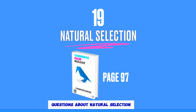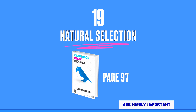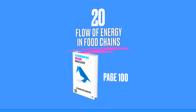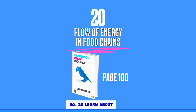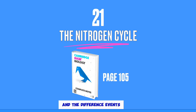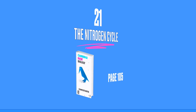Questions about natural selection are highly important. Number 20: learn about the flow of energy in the food chain. Study the role of bacteria and the different events of the nitrogen cycle.